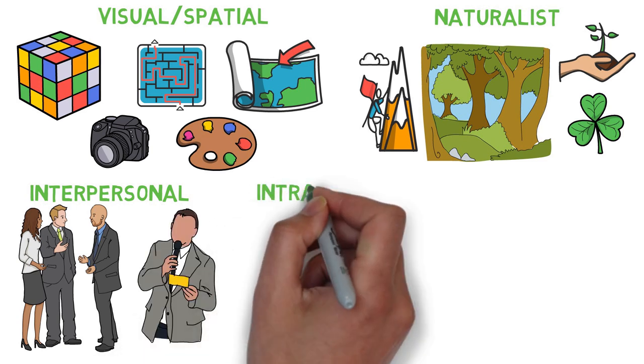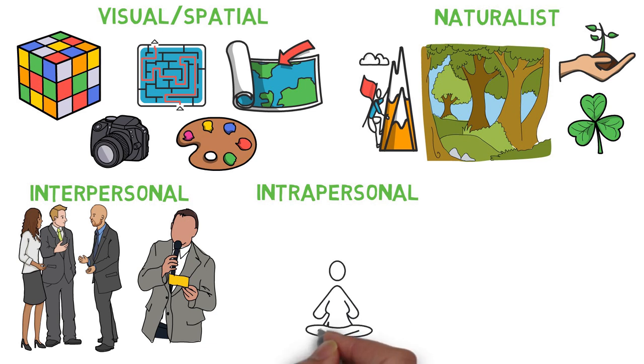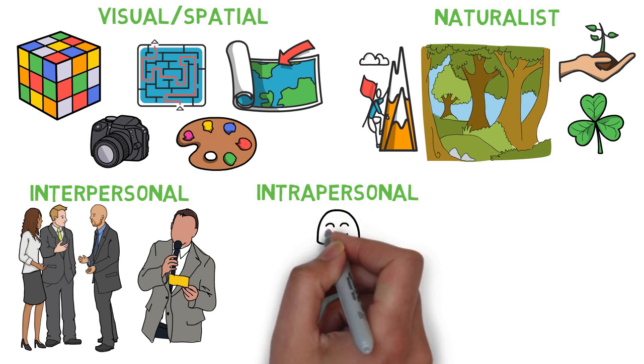The eighth type is intrapersonal intelligence and characterizes people who are better than others at figuring out their own feelings, thoughts and goals. These people are introspective because they often analyze themselves and seek understanding.